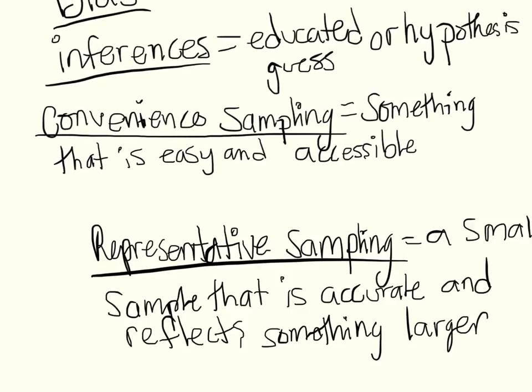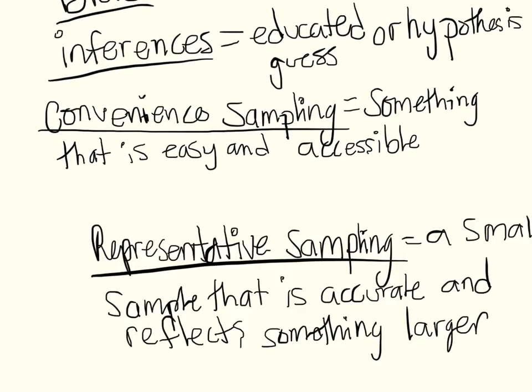Convenience sampling could be an example of maybe you want to survey everybody that has a pet and you go to PetSmart because it's down the street from you and you don't have to survey the millions of people that have a pet in America. So convenience sampling could be just going to maybe PetSmart and asking a couple of customers that are in PetSmart.